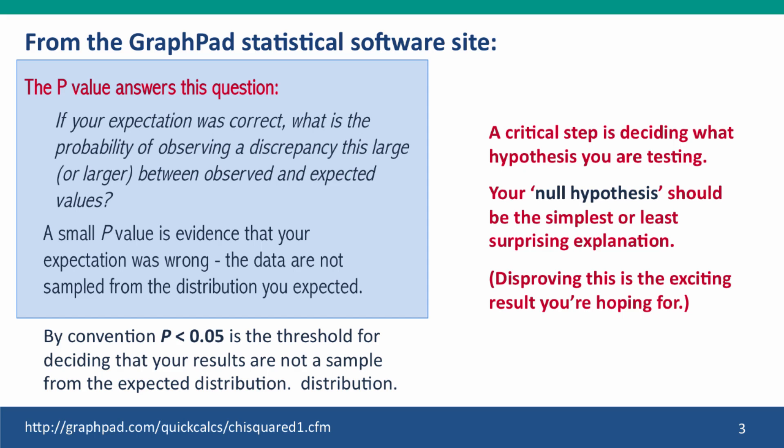The p-value, as we discussed, tells us the probability of observing a particular discrepancy between the results expected under a certain hypothesis and the results that we observed. If the p-value is small, we can say the chances that our observed data are explained by this hypothesis are very small, therefore something else must explain our data.